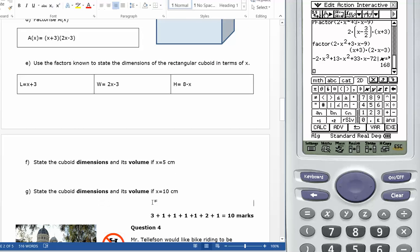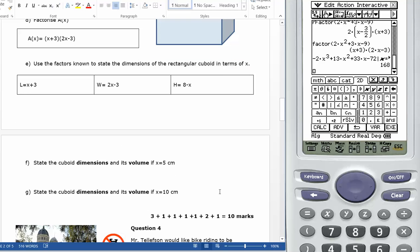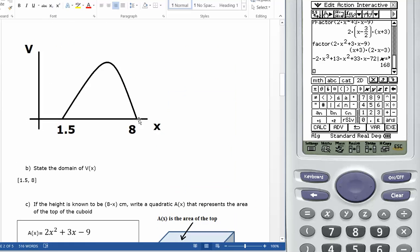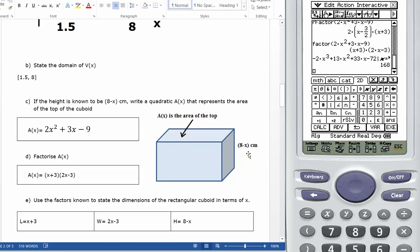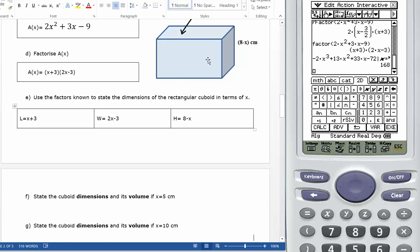And state the dimensions if the volume was 10. Well, the volume can't. I mean, if the x was 10, x can't be 10. X can only be between 1.5 and 8. If x were 10, that would make the height negative 2, which doesn't make sense. So there's no answer to the last view.